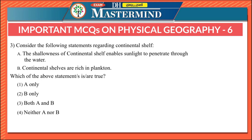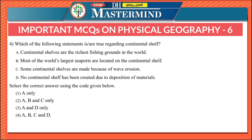The third question considers statements regarding the continental shelf. The shallowness of the continental shelf enables sunlight to penetrate through the water, and continental shelves are rich in plankton. Both statements are correct, so the right option is both A and B. Because the continental shelf is shallow, sunlight penetrates the water, promoting the growth of plankton.